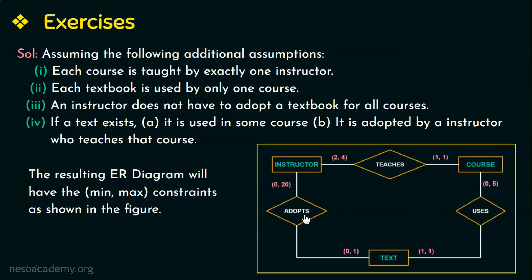Hope you have understood how to write the min-max constraints in this figure. With this we come to the end of the exercise problems based on the entity relationship model. Hope you have understood all the problems that we discussed. Thank you.